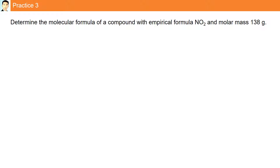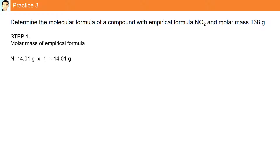Practice question 3: determine the molecular formula of a compound with empirical formula NO2 and a molar mass of 138 grams. The first step is to determine the molar mass of the empirical formula NO2. Nitrogen: 1 atom, 14 grams. Oxygen: 2 atoms, 32 grams. Adding them up, the molar mass is 46.01 grams.